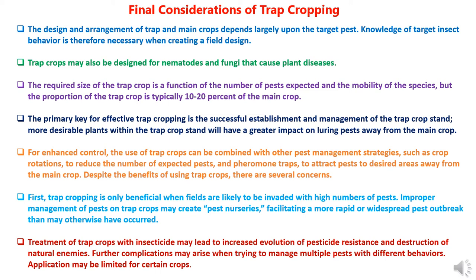For enhanced control, the use of trap crops can be combined with other pest management strategies such as crop rotations and pheromone traps to attract pests to desired areas away from the main crop. Despite the benefits of using trap crops, there are several concerns. Trap cropping is only beneficial when fields are likely to be invaded with high numbers of pests. Improper management of pests on trap crops may create pest nurseries, facilitating a more rapid or widespread pest outbreak.